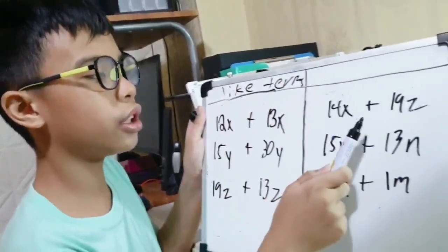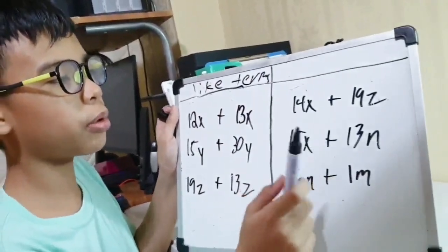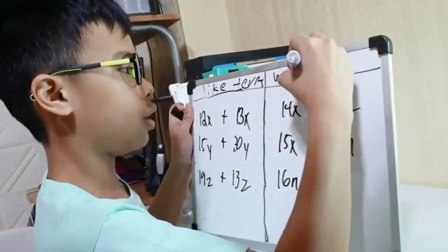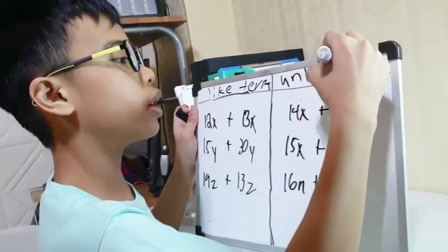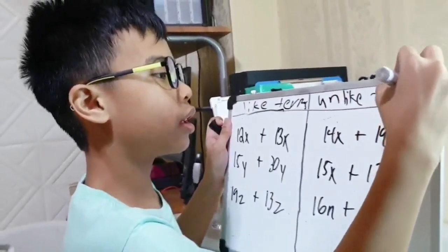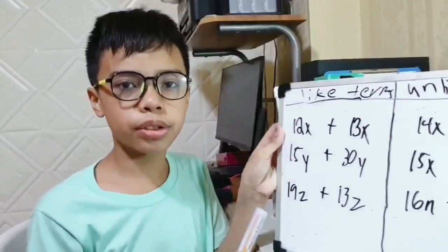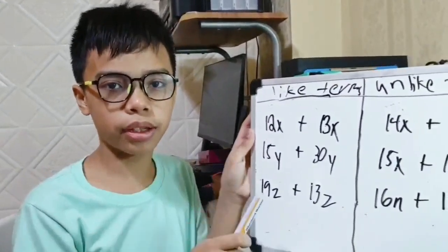And in this other one, since the variables are different, we call them unlike terms. Like terms are terms that contain the same letter variables.